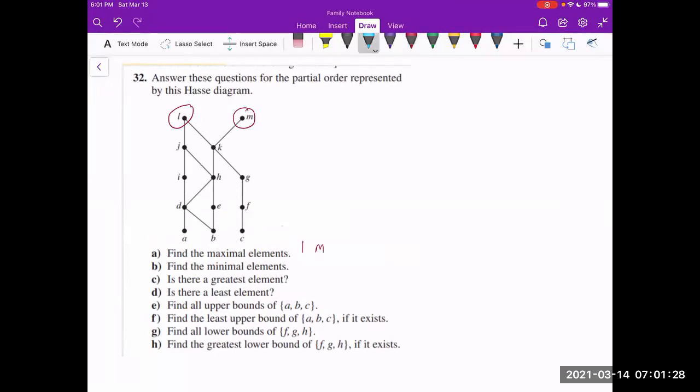What about our minimal elements? So this is going to be just like the opposite. We're saying that what elements have no other elements that are less than them. And in this case, just visually, we can see that's going to be A, B, and C. So I'll write down A, B, and C.